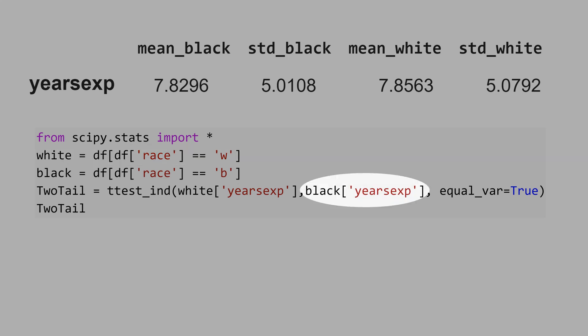In the same way, we pass here black years of experience, and black is defined as race equals b. The df is the data frame, it's just the name of the data set, and here I pass equal_var equals true.